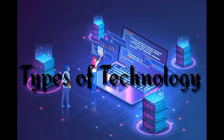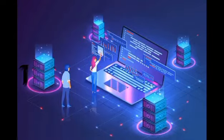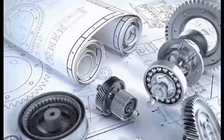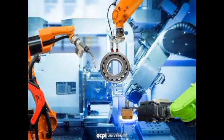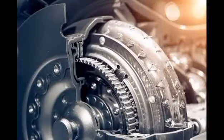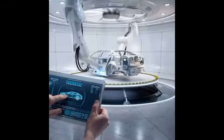Types of Technology. First, we have Mechanical Technology, which includes wheels, cams, levers, gears, belts, and engines. The wheel is probably one of the most important technological advances in human history, and yet it's super simple.